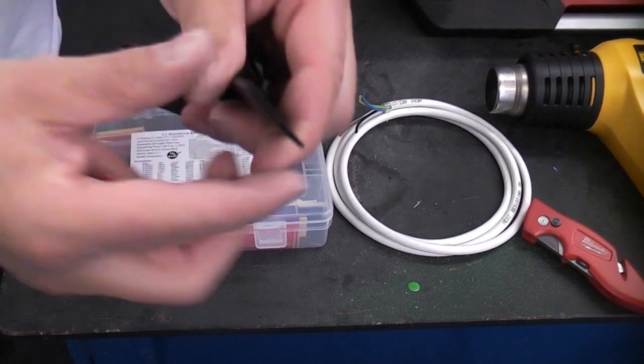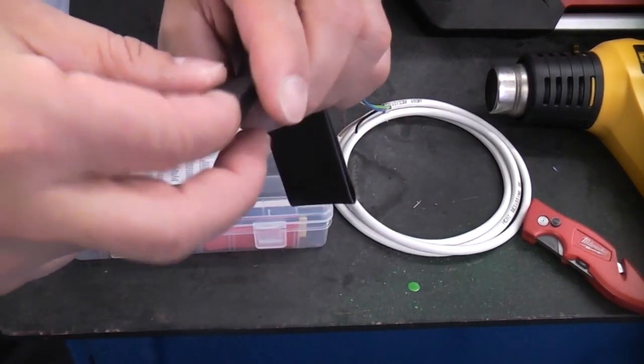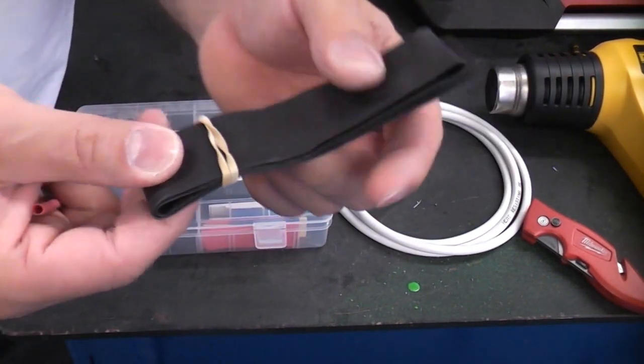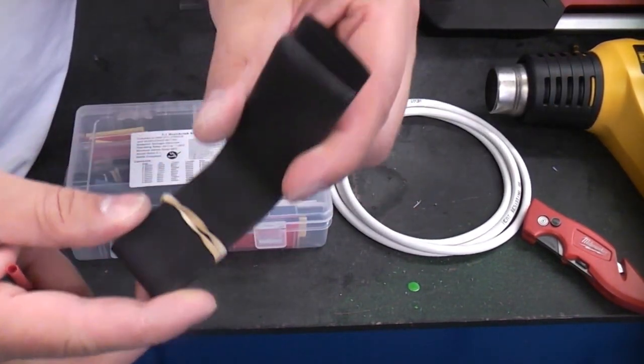You can get it in quite large diameter tubes like that. If you were repairing a big wire, that would be very useful. You could slide that on and repair the insulation using that.